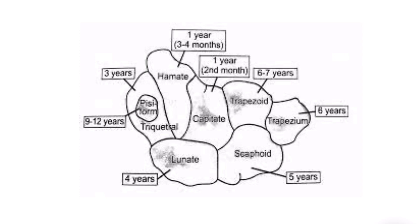In this figure you are seeing a set of carpal bones of the right hand seen in a palmar view, arranged in two rows. In the proximal row: scaphoid, lunate, triquetral, and pisiform. On the lateral side in the distal row: trapezium, trapezoid, capitate, and hamate. The largest carpal bone is the capitate.